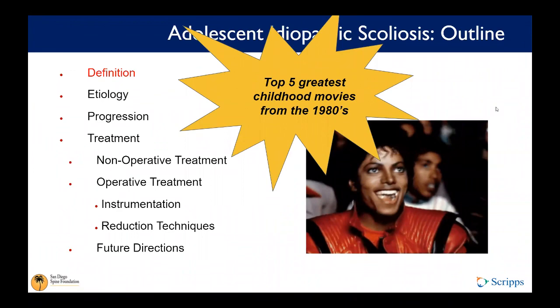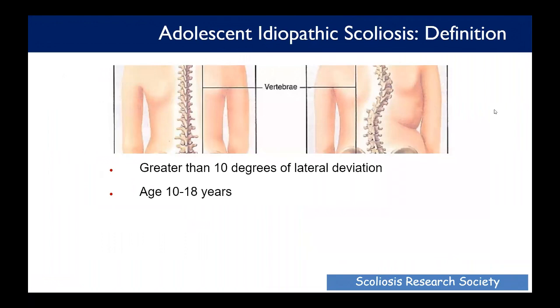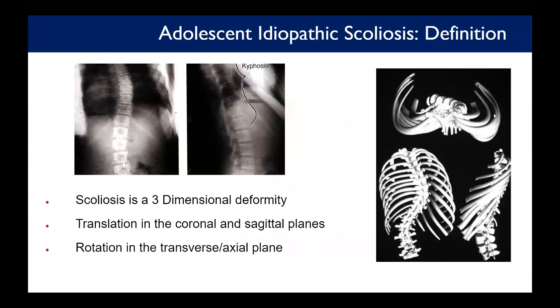The definition of AIS is a greater than 10-degree lateral deviation based on the SRS definition, with age 10 to 18 years — earlier than that would be considered juvenile idiopathic. But this is an oversimplification: scoliosis is not just a lateral deviation of the spine, it's a three-dimensional deformity.